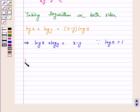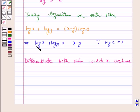Now differentiate both sides with respect to x. We have 1/x plus the derivative of log y, which is (1/y)(dy/dx), equals 1 minus dy/dx.